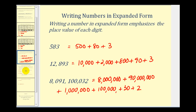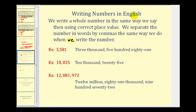The last thing we'll do is take a look at how we write whole numbers in English. We write a whole number in the same way that we say them using correct place value. We separate the number in words by commas the same way we do when we write the number. So for example, here we have three thousand, five hundred eighty-one. Here we have ten thousand, twenty-five. Notice the comma between the ten thousand and the twenty-five. And then here we have twelve million, eighty-one thousand, nine hundred seventy-two.